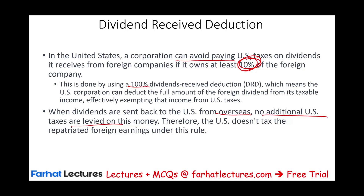Why do they give you the DRD rather than just using participation exemption? Because they want to know how much you are earning. If it were participation exemption, you just wouldn't have to report this income at all. They want you to report it because you might be bringing that money back, so they want to be aware of it.